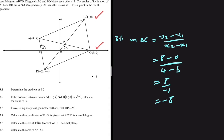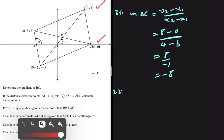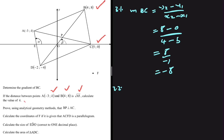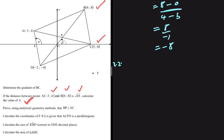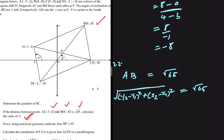Let's move forward to 3.2. The question states that if the distance between points A and B equals the square root of 65, calculate the value of k. We use the distance formula: the square root of (y2 minus y1) squared plus (x2 minus x1) squared equals the square root of 65. The only unknown after substituting A and B's coordinates will be k.